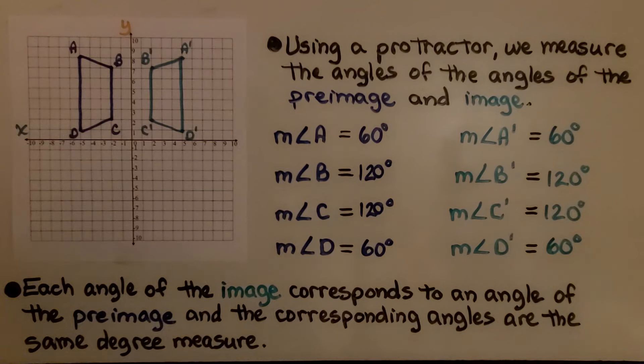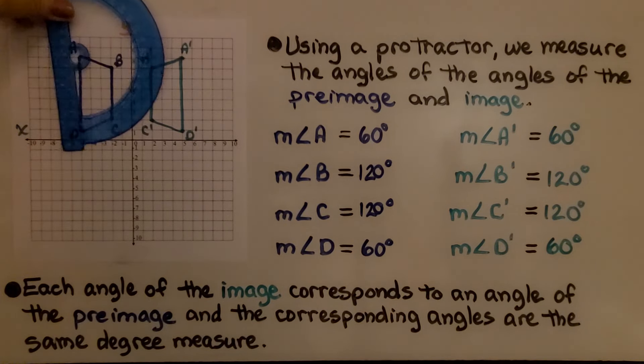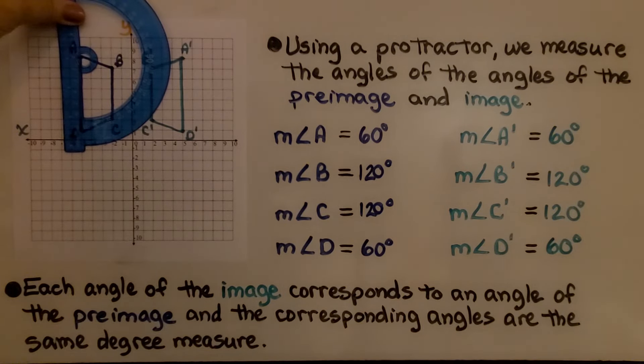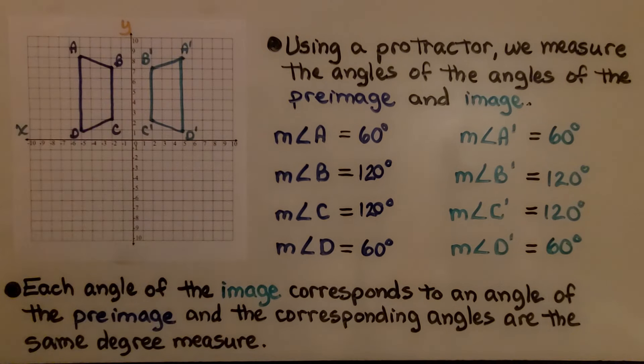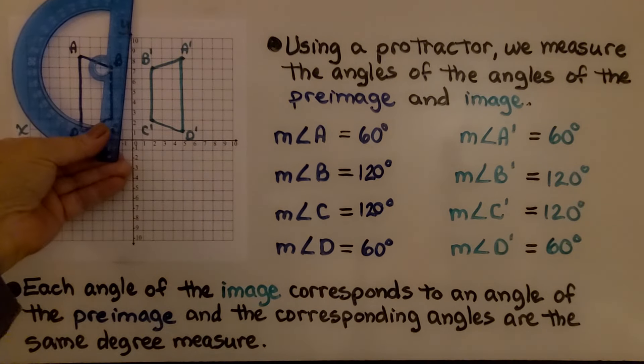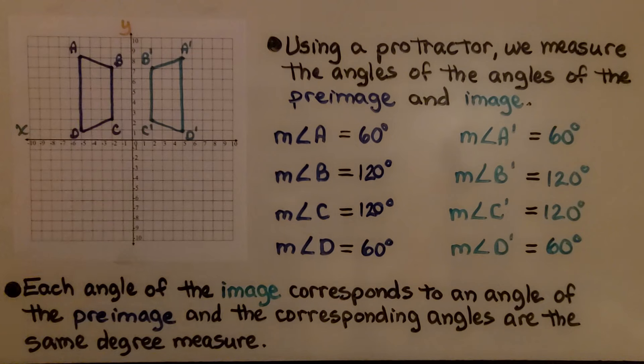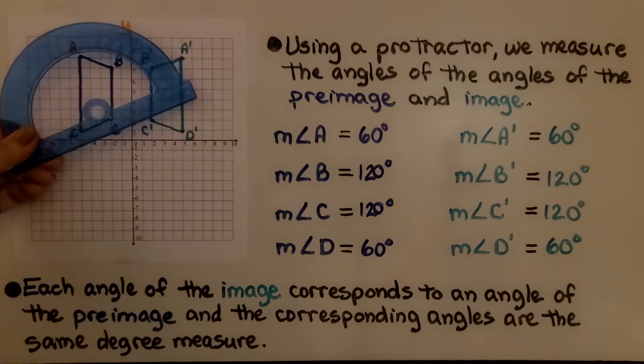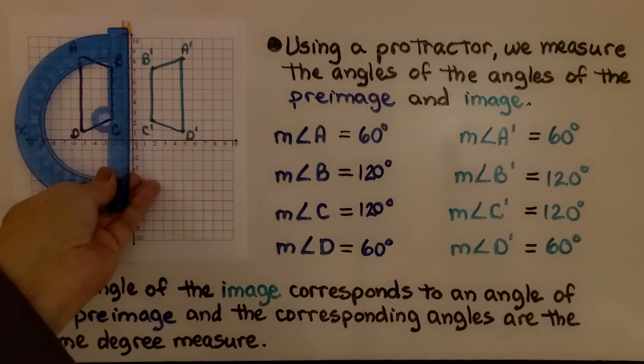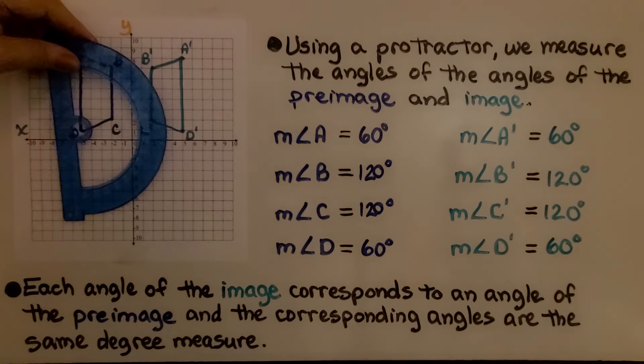Using a protractor, we measure the angles of the pre-image. We measure angle A and find that it's 60 degrees. We measure B and find it's 120 degrees. C is also 120 degrees. And D is 60 degrees.